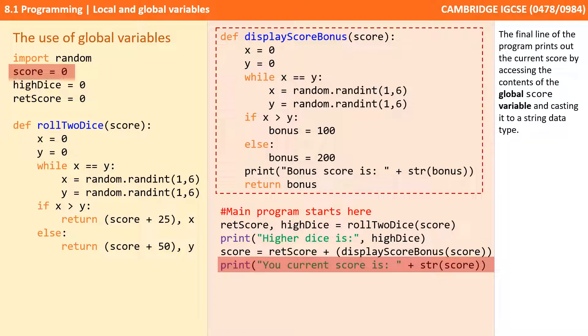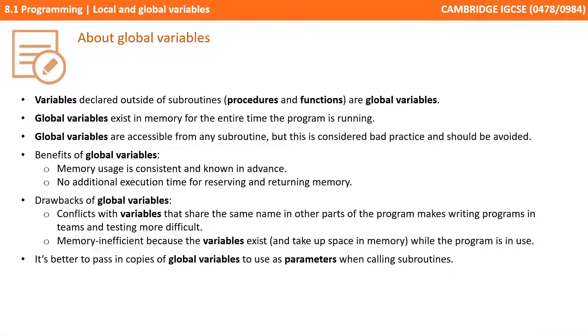The final line of the program prints out the current score by accessing the contents of the global score variable and casting it to a string data type. That's everything you need to know about global variables. Pause the video and take some notes.